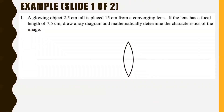Example one: a glowing object 2.5 centimeters tall is placed 15 centimeters from a converging lens — in other words, a convex lens — with a focal length of 7.5 centimeters. Draw a ray diagram and mathematically determine the characteristics of the image. Since it's a converging lens, the focal length is a positive number. The focal point is at 7.5 centimeters from the lens, and since this is a convex lens, that first dot is actually the secondary focal point, with the primary focal point equal distance away on the other side.